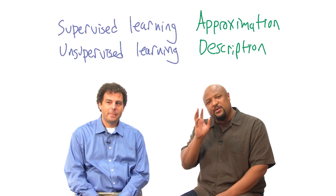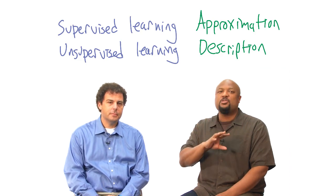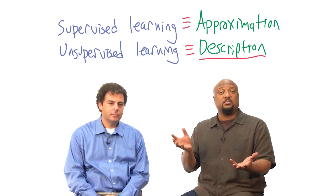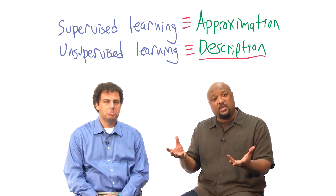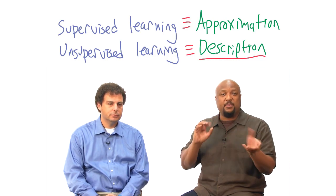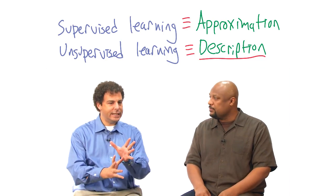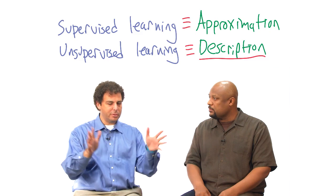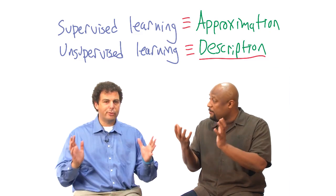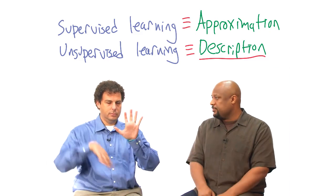So if supervised learning is about function approximation, then unsupervised learning is about description. It's about taking a set of data and figuring out how you might divide it up one way or the other. Or maybe even summarization — it's not just a description, but a shorter description. Yeah, it's usually a concise, packed description.